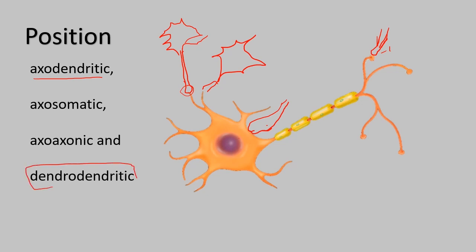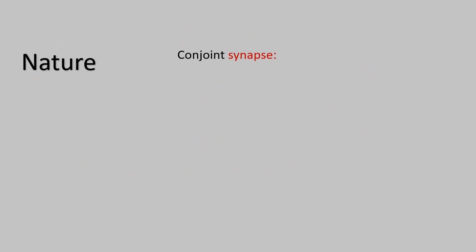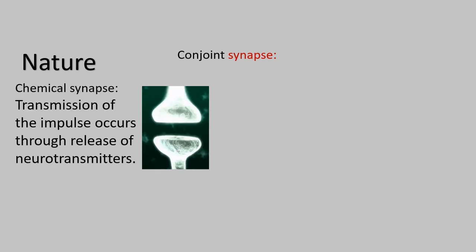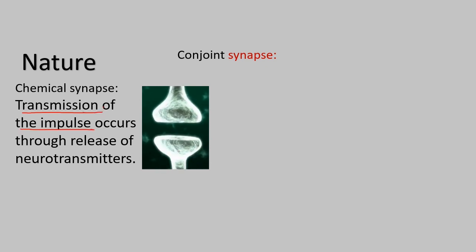What is most common is the axodendrite synapse. But all these types are found in the brain and nerves. What is the nature of the synapse? There is a pre-synaptic neuron and post-synaptic neuron. It is called chemical synapse. Most of the time, there is a chemical synapse.